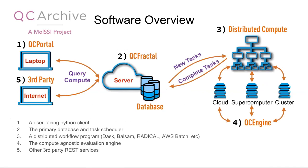This is obviously quite a large software stack. The client interface you'd find on your laptop is called QC Portal. We have a central server called QC Fractal which hosts all data and submits new computations. We use a variety of distributed workflow tools depending on your supercomputing cluster or AWS — it's not one-size-fits-all. Then we go through a small program called QC Engine, which takes a single representation and farms it out to different QM programs — semi-empirical or things like force fields if you want.